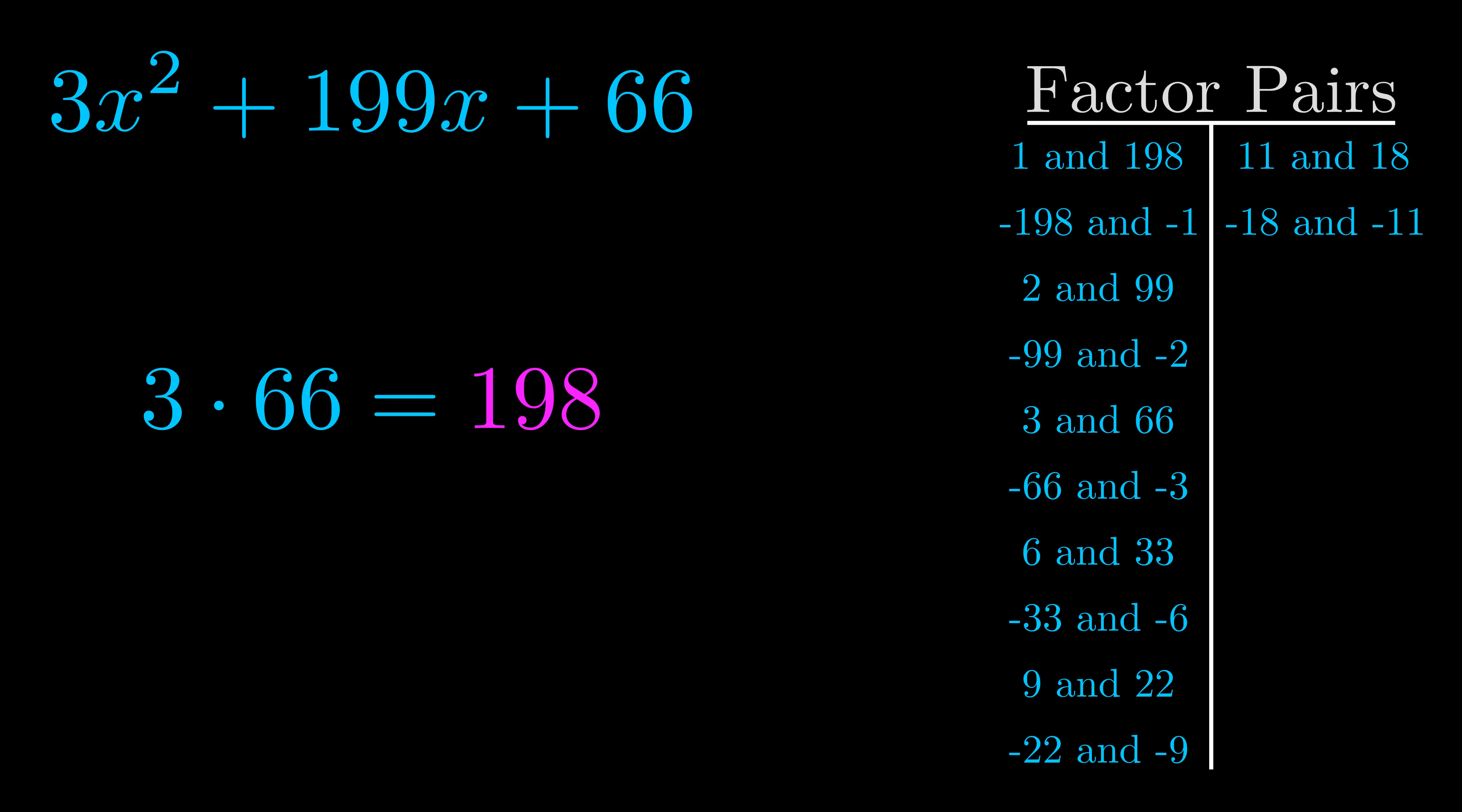The b value is the coefficient on the x term. That's the middle term, the one that we haven't done anything with yet. And really this is the only factor pair that we need.